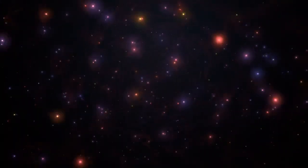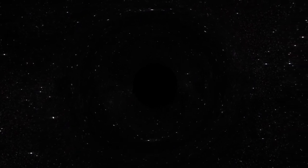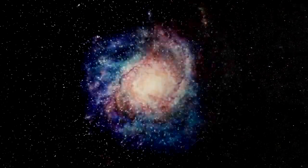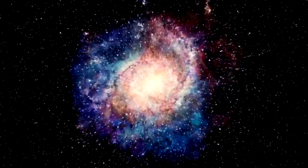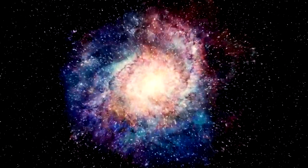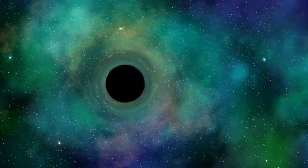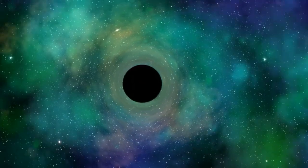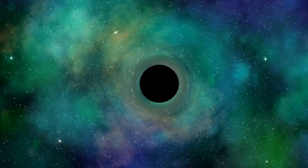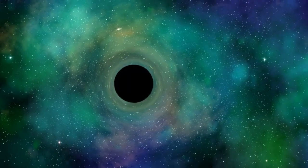But the evidence for dark matter doesn't stop there. Enter gravitational lensing, a phenomenon predicted by Einstein's theory of general relativity. When light from a distant galaxy passes near a massive object like a galaxy cluster, it's bent and magnified, creating distorted, sometimes even ring-like images known as Einstein rings.